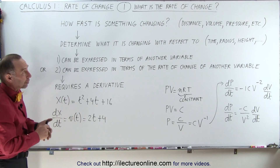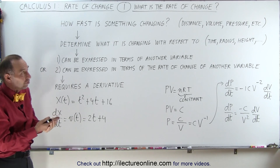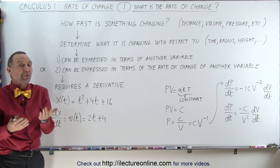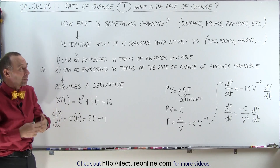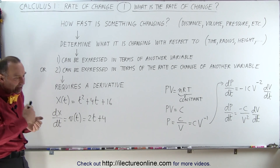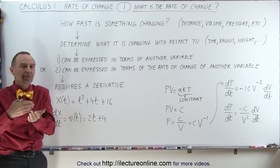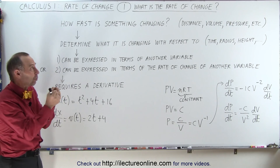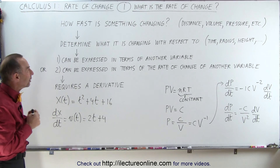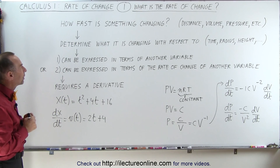Now, that could be the distance, the volume, the pressure of something — it could be any number of things. So you're asking the question: how fast is something changing? That's what we mean by the rate of change.